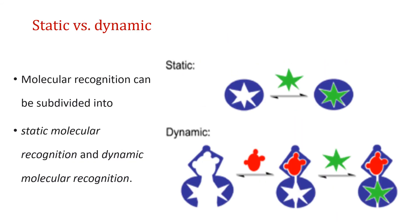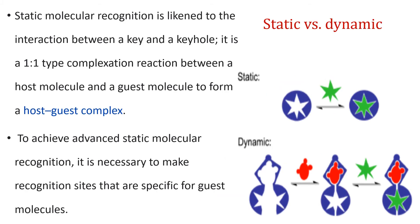Molecular recognition can be subdivided into static molecular recognition and dynamic molecular recognition. Static molecular recognition is just like an interaction between a key and a keyhole. That is, it is a one-to-one type complexation reaction between a host molecule and a guest molecule to form a host-guest complex. It is necessary to make recognition sites that are specific for guest molecules.